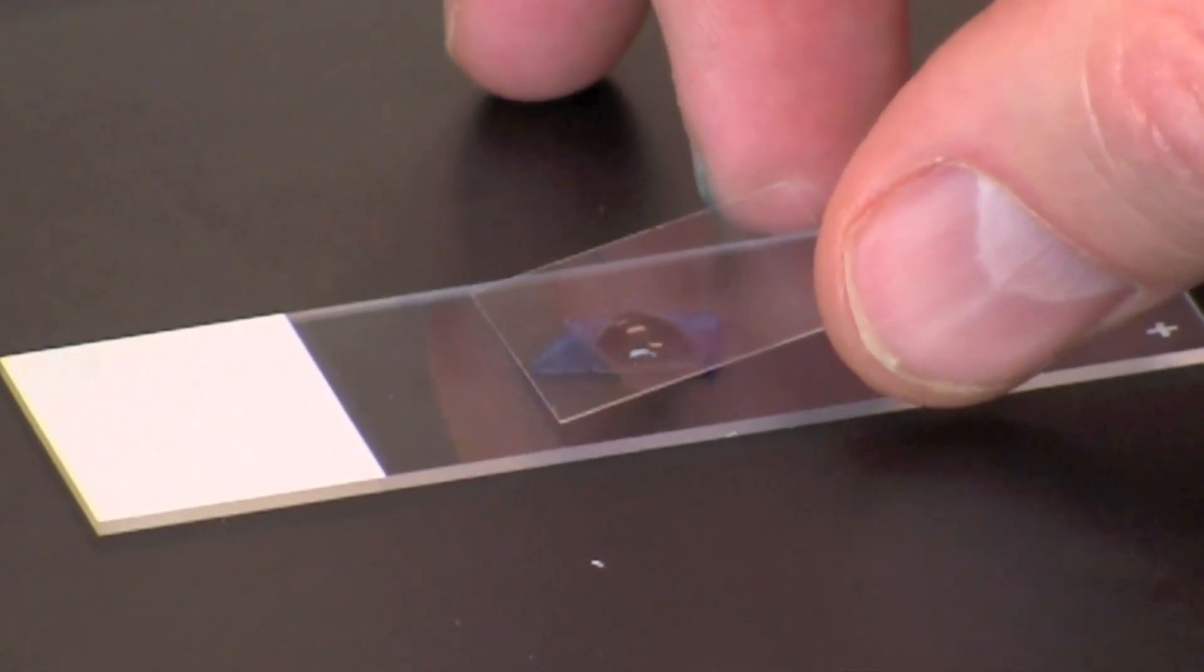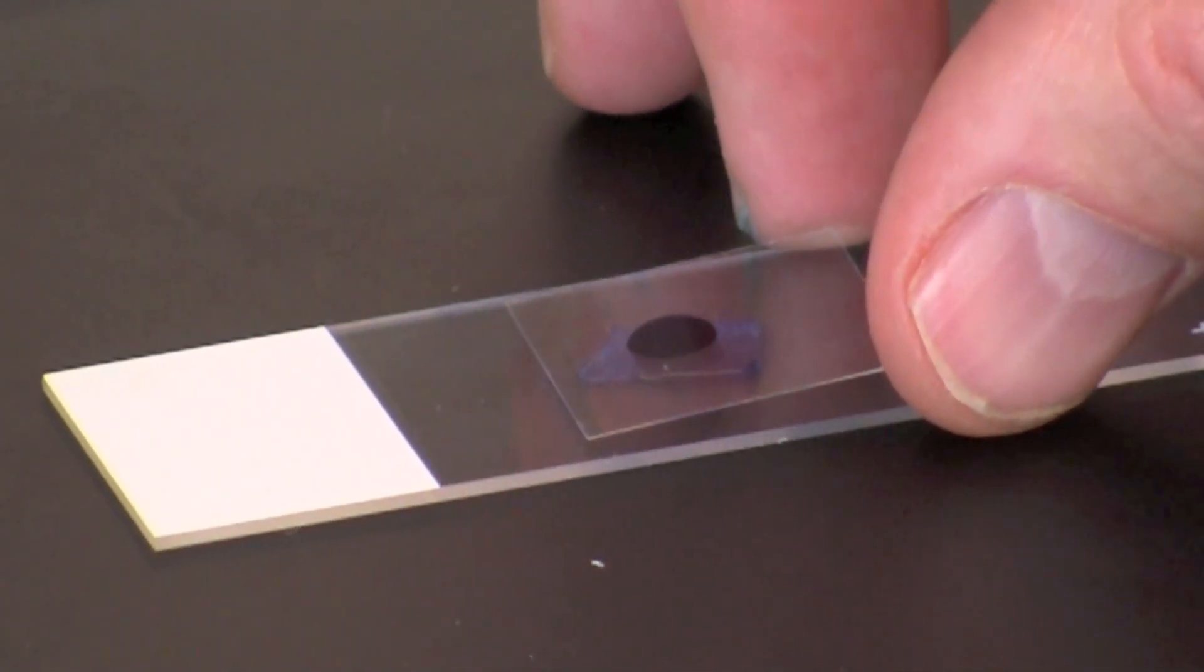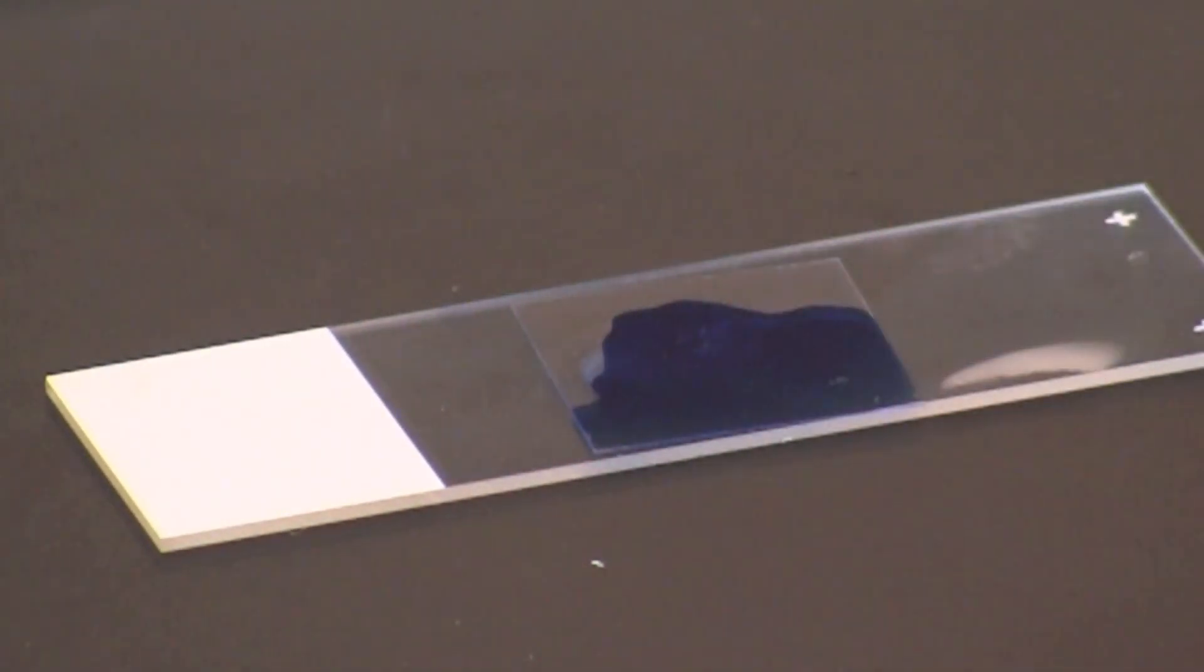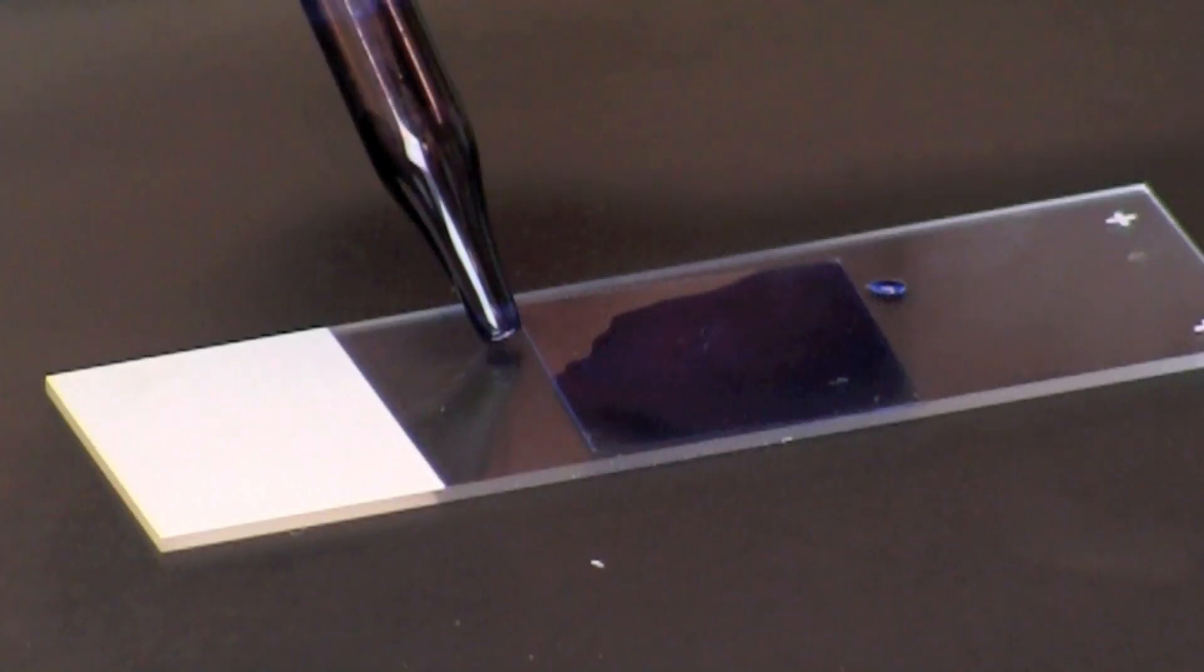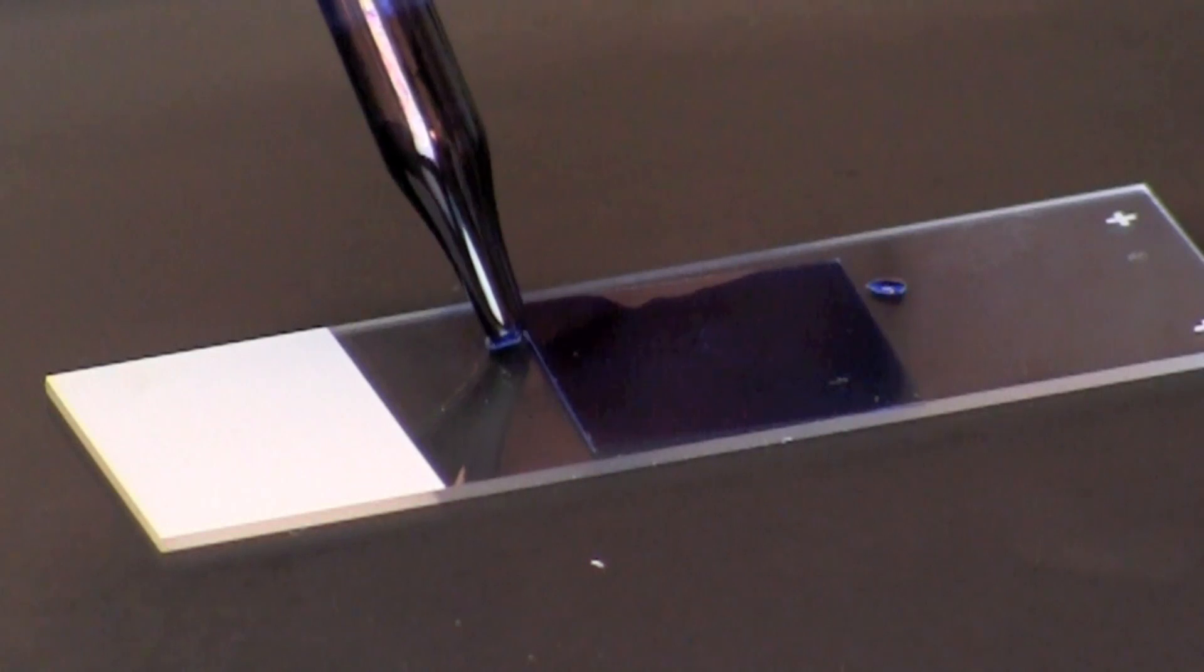Prepare the wet mount by lowering a coverslip over the stain, starting at a 45 degree angle. If a bubble forms under the slide, additional stain may be added along the side of the coverslip.